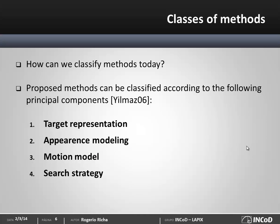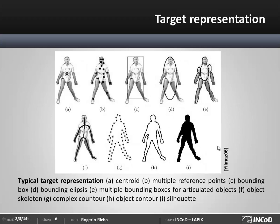Let's look at these components in more detail, starting with the target representation. Yilmaz collected several typical target representations used in the literature, including centroids, reference points, bounding boxes, skeletons, and silhouettes. Among these, the bounding box is by far the most common, because it can easily define a very large variety of objects. For this reason, we are going to use it as our default target representation throughout this tutorial.